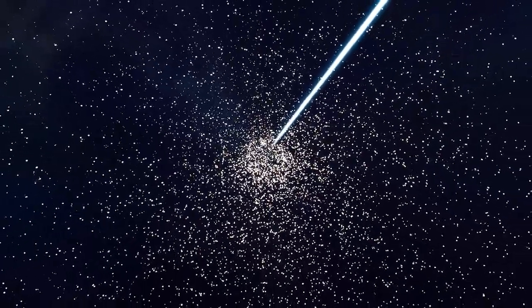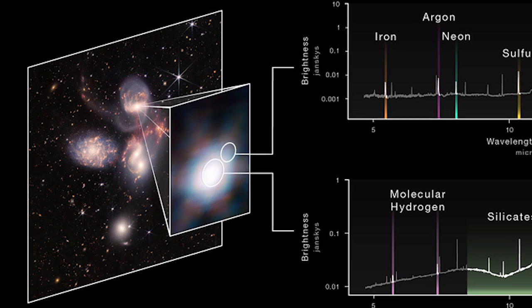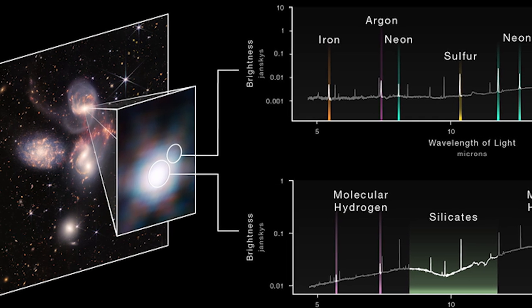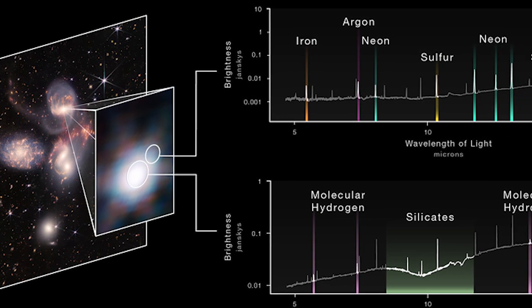JWST was able to examine more than just iron and hydrogen. The telescope saw an outflow of hot gas that contained hot ionized gases including iron, argon, neon, sulfur, and oxygen in its mid-infrared studies.